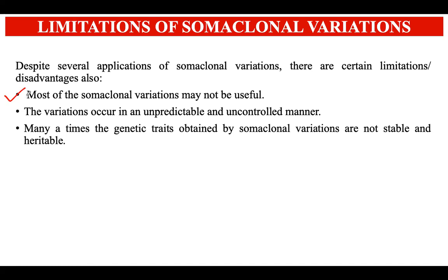There are certain limitations to somaclonal variations. Most somaclonal variations may not be useful — as with without in vitro selection, certain variations occurring in plants might not be useful, making the process a waste of time. Variations occur in an unpredictable and uncontrolled manner. Many times the genetic traits obtained by somaclonal variations are not stable and not heritable, which is a primary concern. You may observe a specific trait in one plant, but when you look for it in the progenies it may not be there.